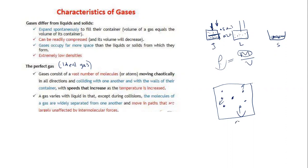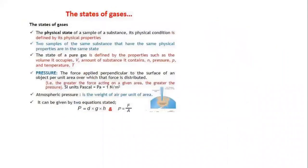For example, place a Bunsen burner under a container — the gas particles will move vigorously and chaotically, colliding with the walls and each other. There appears to be no attraction between them, so we consider this an ideal gas. A gas differs from a liquid in that, except during collisions, the molecules are widely separated and move in paths largely unaffected by intermolecular force.